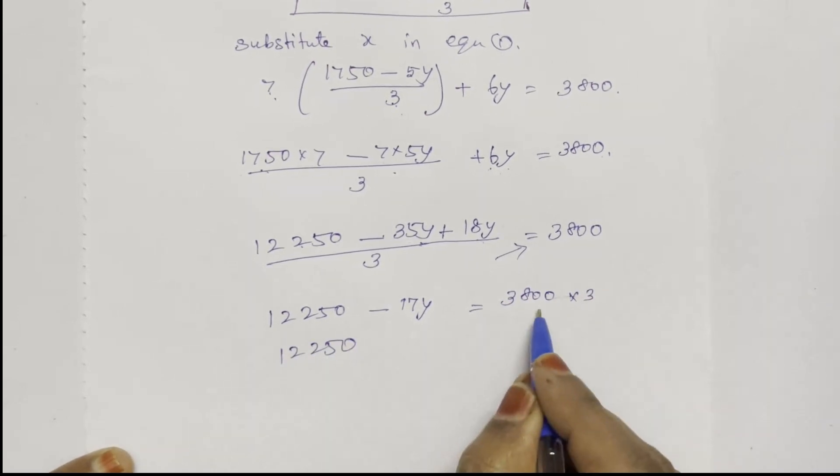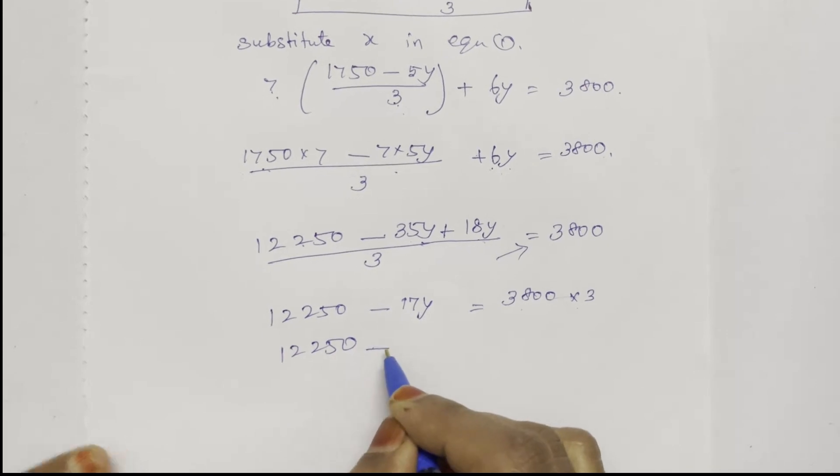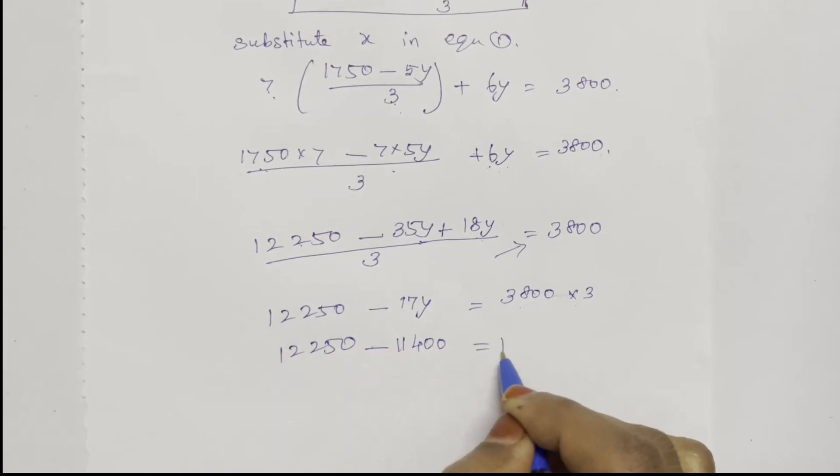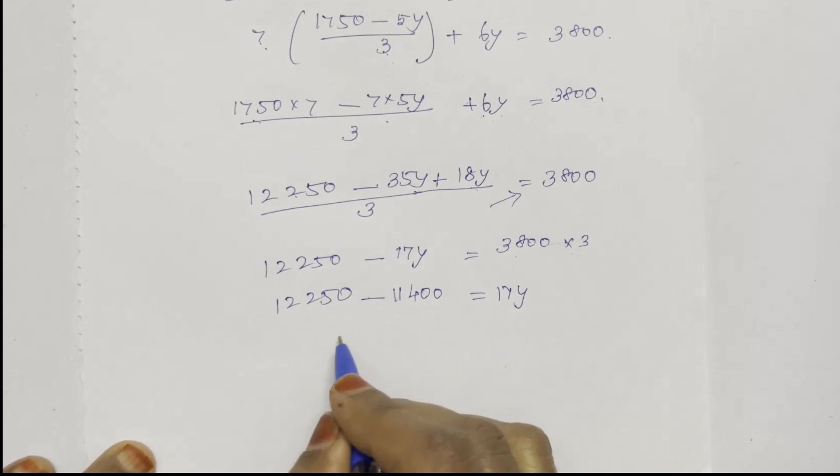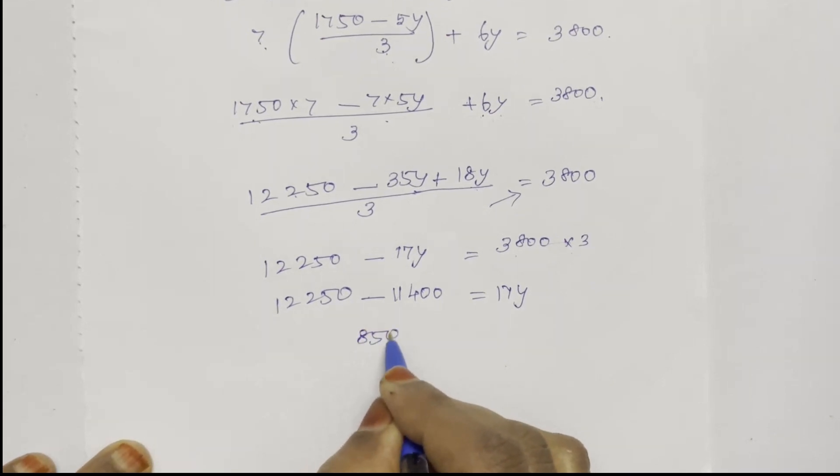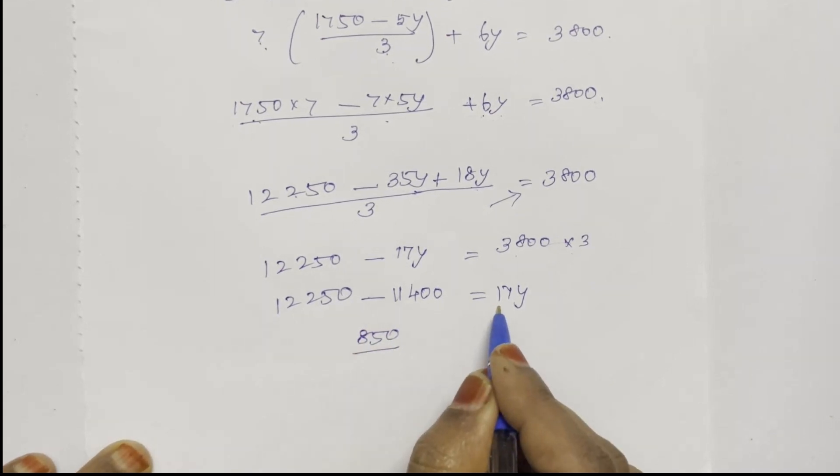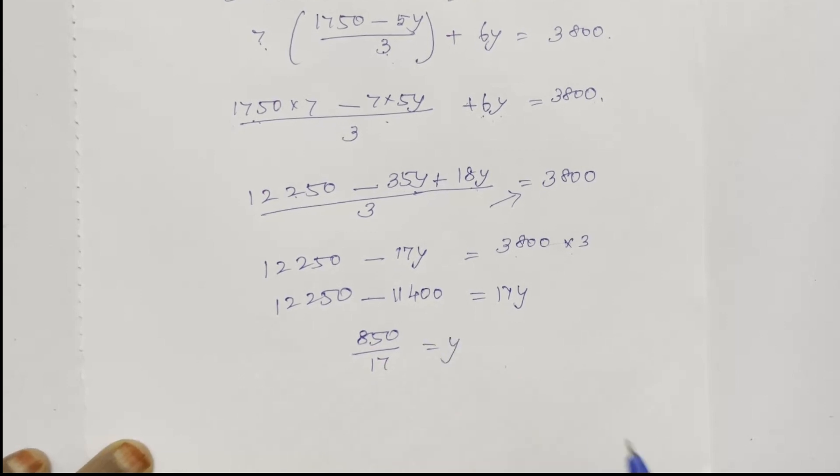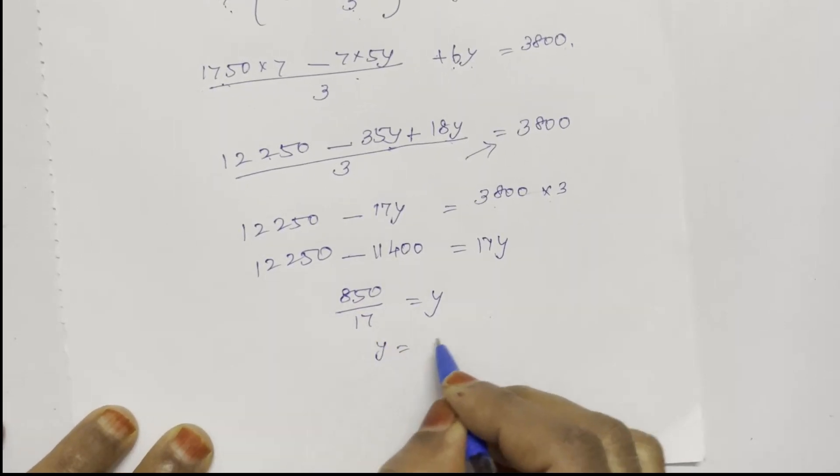Move terms to the right side: 11400 equals 17Y. Separate these: 850 divided by 17, so Y equals 50.